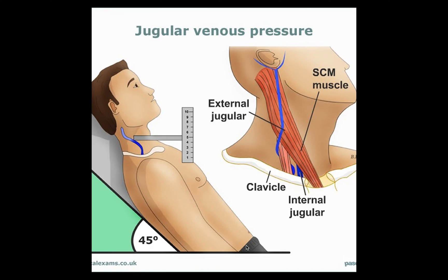Today we talk about the estimation of the jugular venous pressure. The jugular venous pressure reflects the central venous pressure or right atrial pressure. Normally it is about nine centimeters water. The sternal angle is approximately five centimeters above the right atrium, so normal jugular venous pressure should be about four centimeters above this angle when the patient is at 45 degrees.